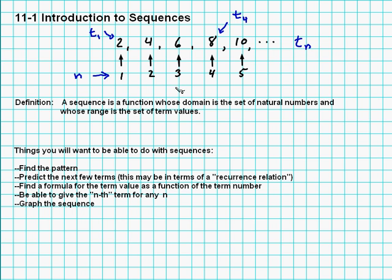Now, some of the things you want to do with sequences are find the pattern, predict the next few terms, find a formula for the term. In other words, one of the goals here for this pattern, for instance, is you'd like to find a formula. So if you give me n, I'll give you the term that goes in that spot. Like, what's number 6 going to be, for instance? Well, 2, 4, 6, 8, 10. Now, you might say you can find the next term by adding 2 each time.